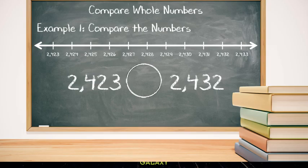So let's investigate this first example. We want to compare 2,423 and 2,432. Let's think about the number line. Both numbers are in the two thousands.